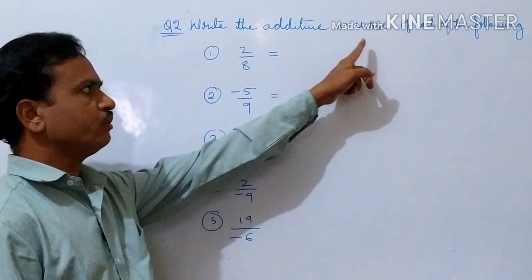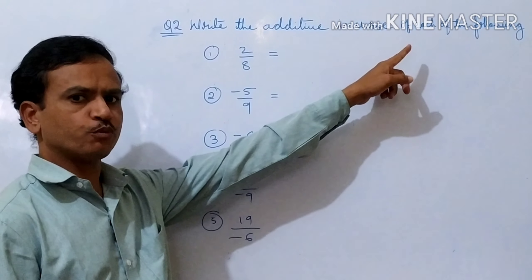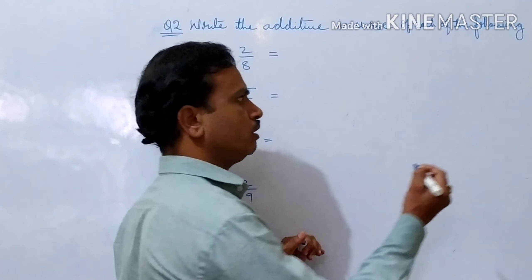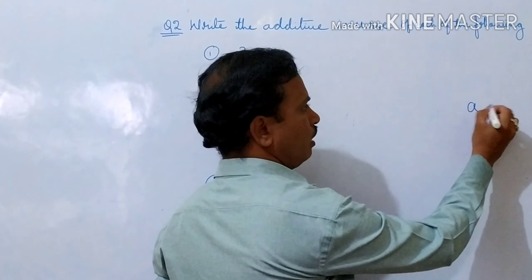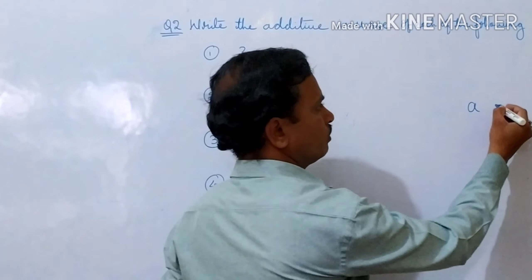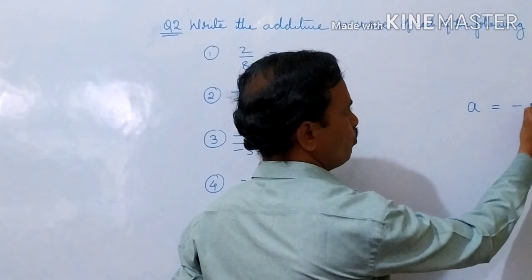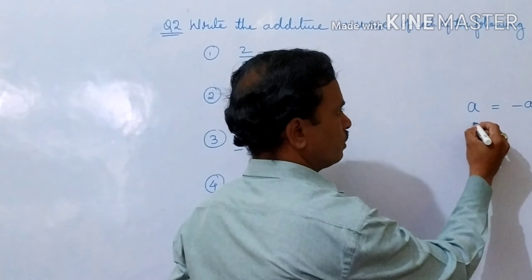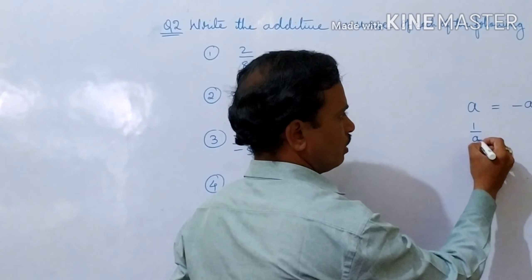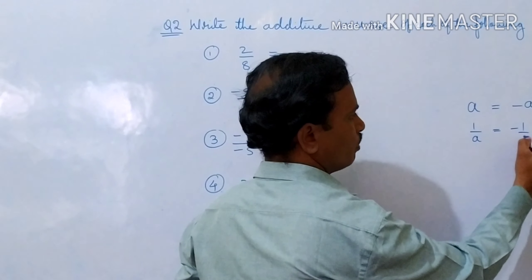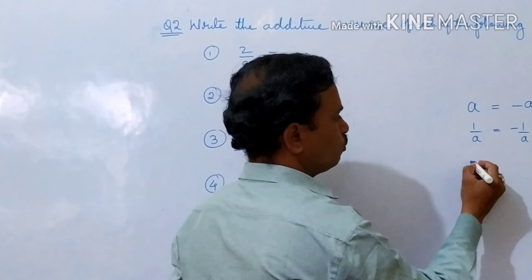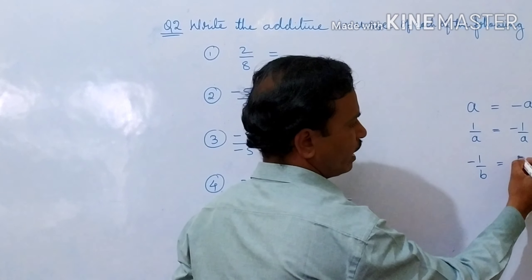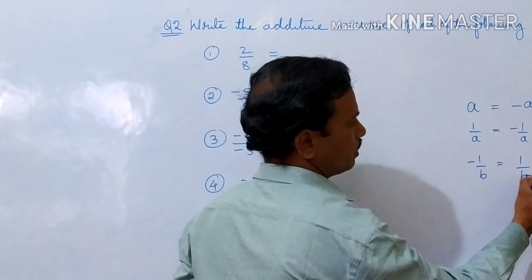Write the additive inverse of each of the following. Additive inverse means: for example, take A — A is a positive variable, so the additive inverse is minus A. Next, 1 by A: the additive inverse is minus 1 by A. Now for minus 1 by B: the additive inverse of minus 1 by B is 1 by B.